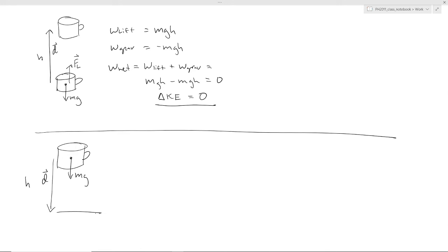So in this situation, you're not doing any work because you're no longer applying a lifting force, but the work of gravity is going to be positive because both the force of gravity and the displacement are pointed in the same direction and that would equal mgh.